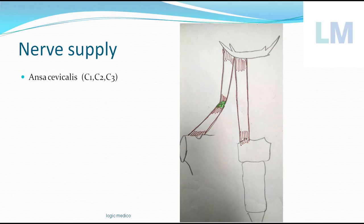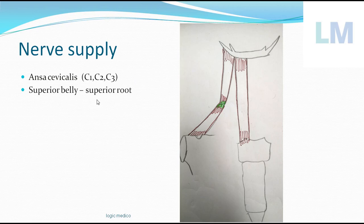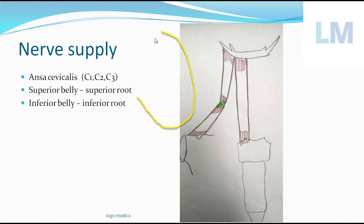Nerve supply is interesting. It is supplied by ansa cervicalis — C1, C2, C3. This is a loop of nerve that resembles a goose's foot. The superior belly is supplied by the superior root, and the inferior belly is supplied by the inferior root. C1 fibers form the superior root, and C2, C3 fibers form the inferior root. So it is supplied by ansa cervicalis.